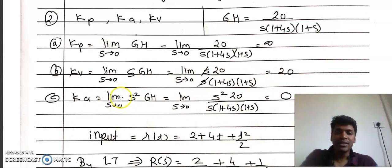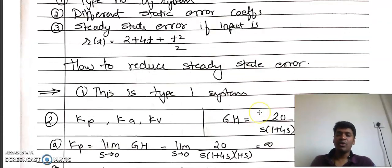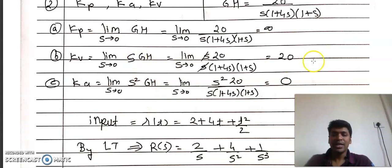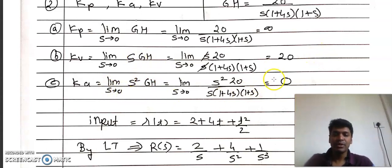For Ka, substitute the formula: Ka = lim(s→0) s²·G·H. Just substitute the value of s=0 — Ka comes out to be 0. So we have found all static error coefficients: Kp = infinity, Kv = 20, Ka = 0.